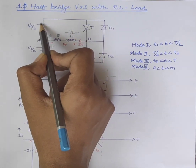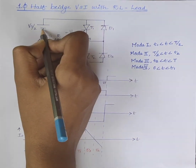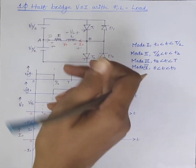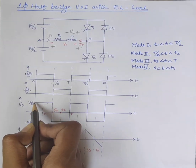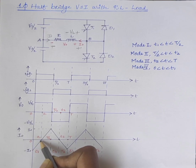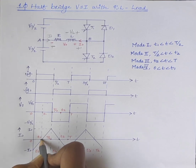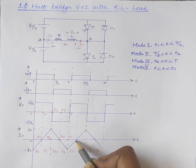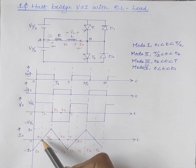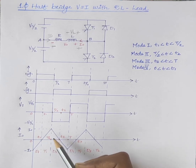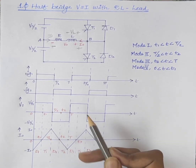During this interval, the output voltage is plus Vs/2 and the load current decreases gradually from negative maximum to zero. At T1 (or T3), the load current goes to zero and thyristor T1 can be turned on again, and this cycle of operation repeats.